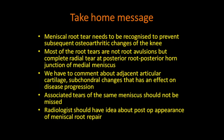In conclusion, key take-home messages: meniscal root tear needs to be recognized to prevent subsequent osteoarthritic changes. Most root tears are not true root avulsions but complete radial tears at the posterior root–posterior horn junction or pararoot tears. The report must comment on meniscus health, adjacent articular cartilage condition, subchondral changes affecting disease progression, and the degree of subchondral edema. Associated tears — especially peripheral ramp lesions — must not be missed, as unaddressed ramp lesions compromise arthroscopic repair outcomes. Radiologists should also be familiar with post-op MRI appearance of meniscal root repair to provide accurate reports.